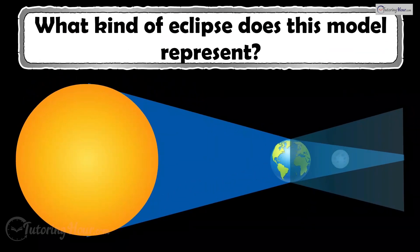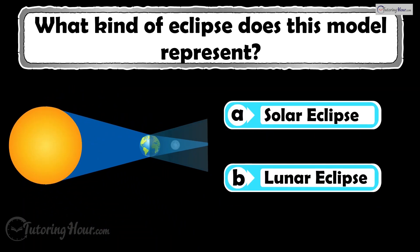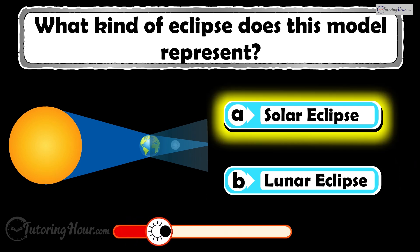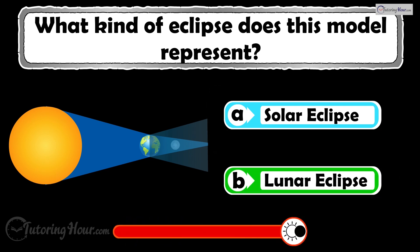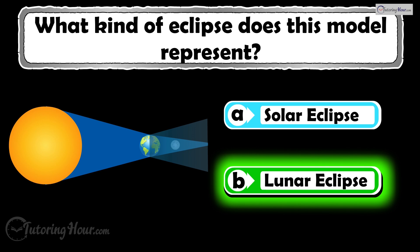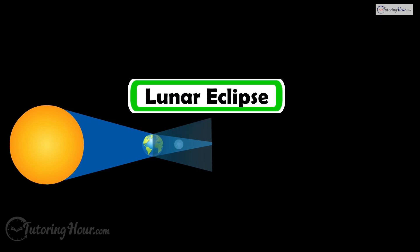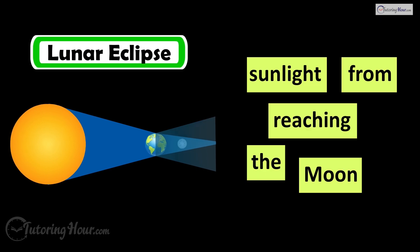What kind of eclipse does this model represent? Is it A, solar eclipse, or B, lunar eclipse? The correct answer is the lunar eclipse. It happens when the Earth blocks sunlight from reaching the moon.